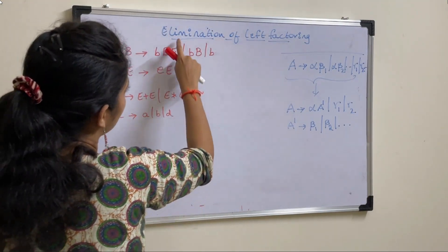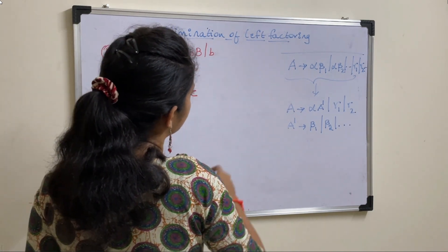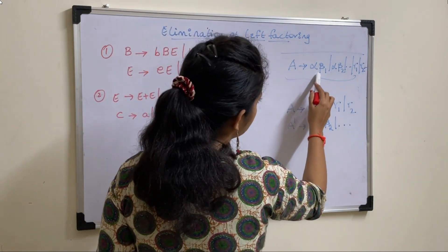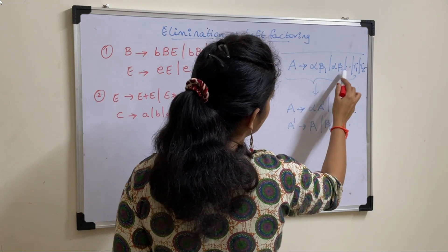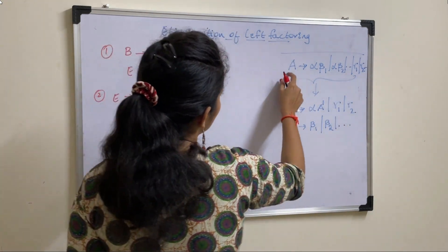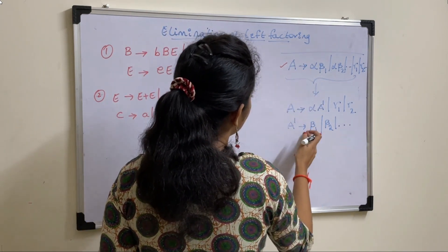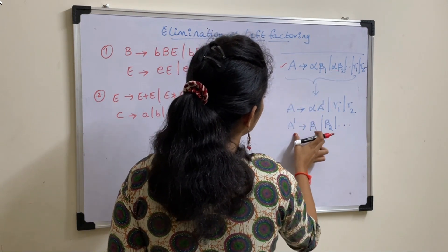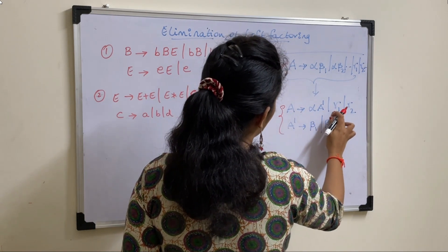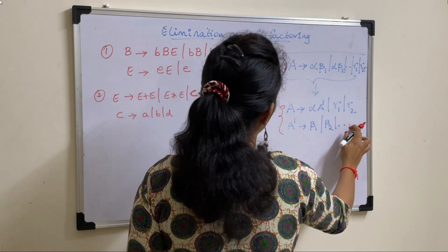In this video, let us see how to eliminate left factoring from a given grammar. If a grammar contains productions of the form A derives alpha beta1 or alpha beta2, and so on, or gamma1 or gamma2, then that is called left factoring. These productions should be converted into the form: A derives alpha A-dash or gamma1 or gamma2, and A-dash derives beta1 or beta2 and so on.